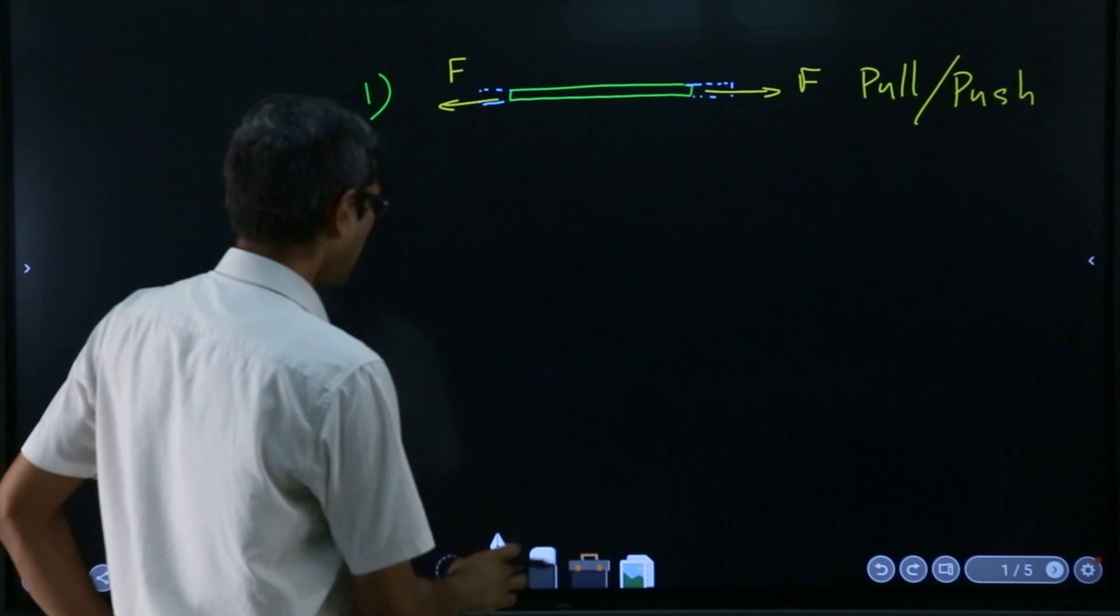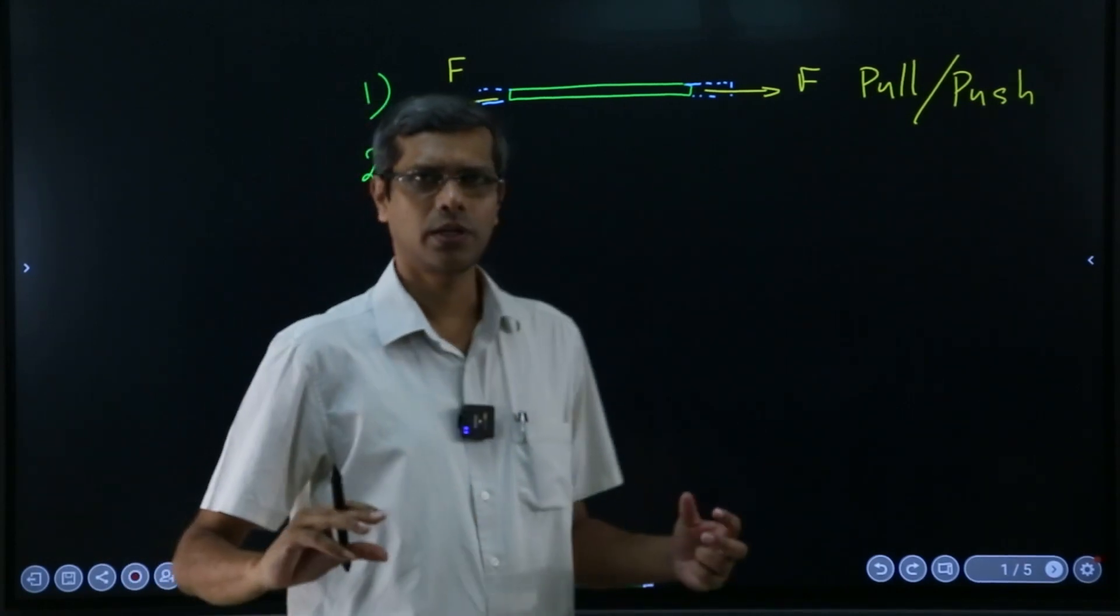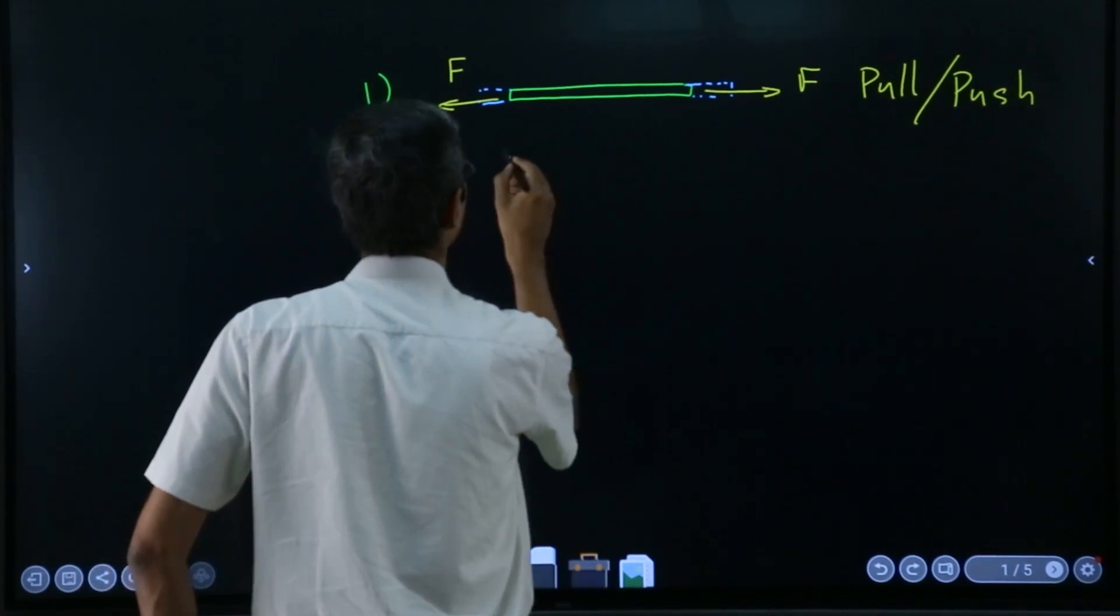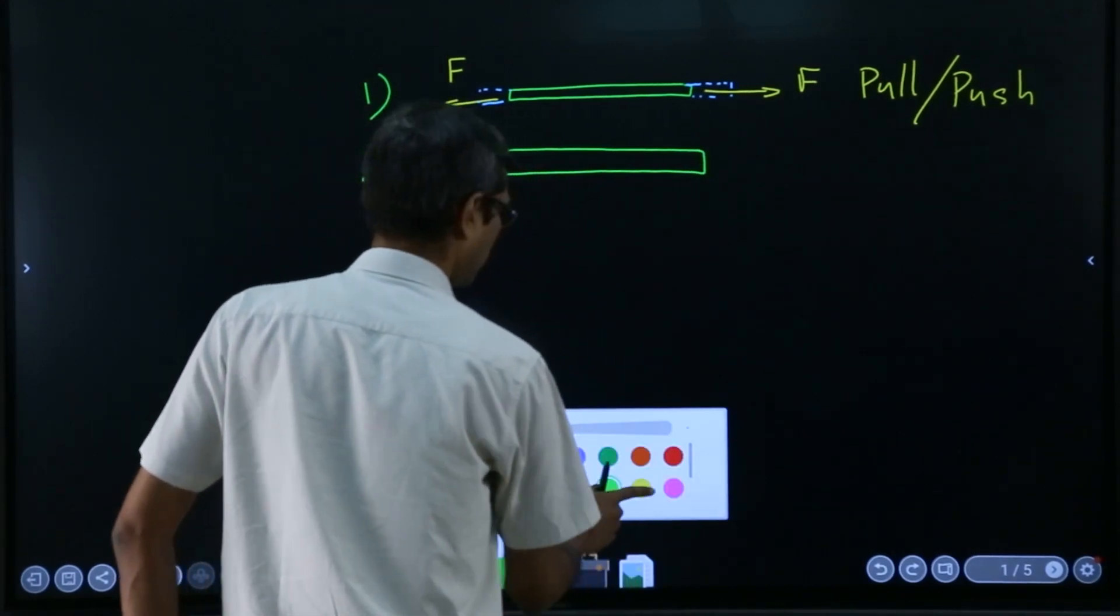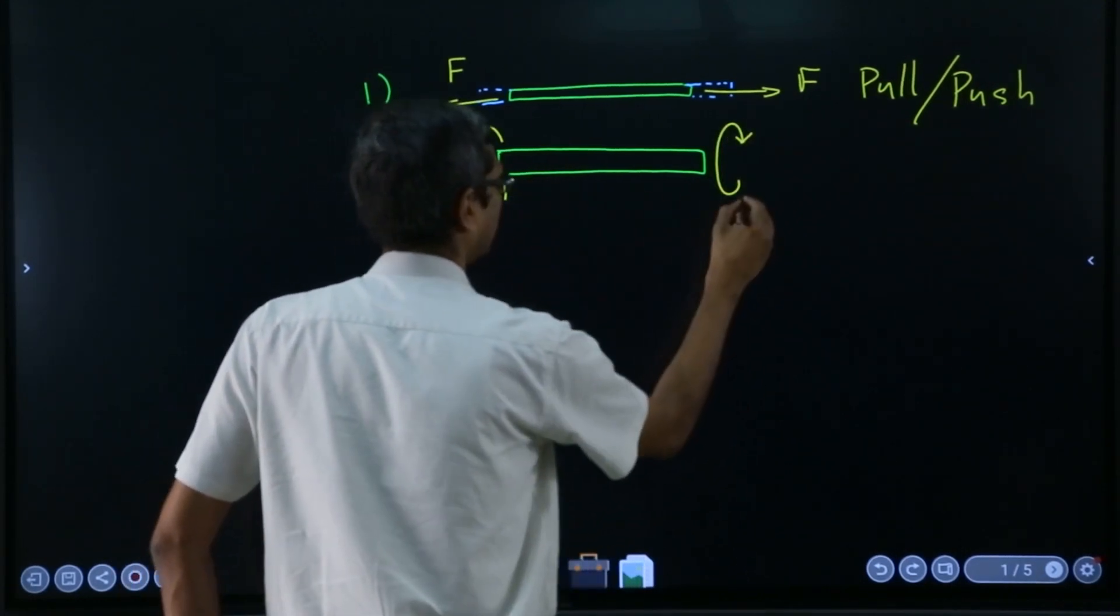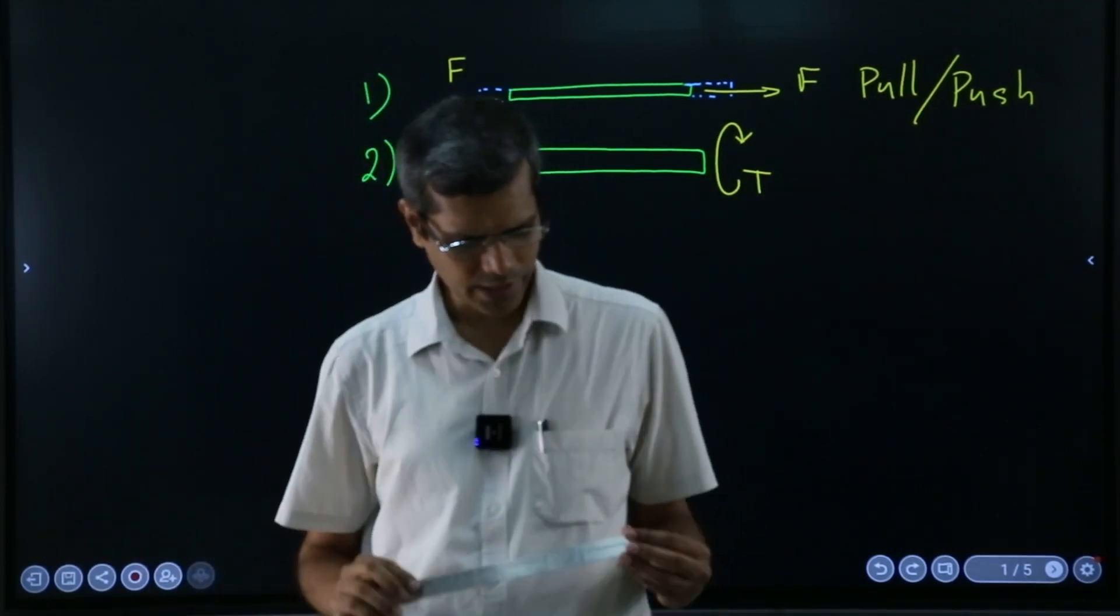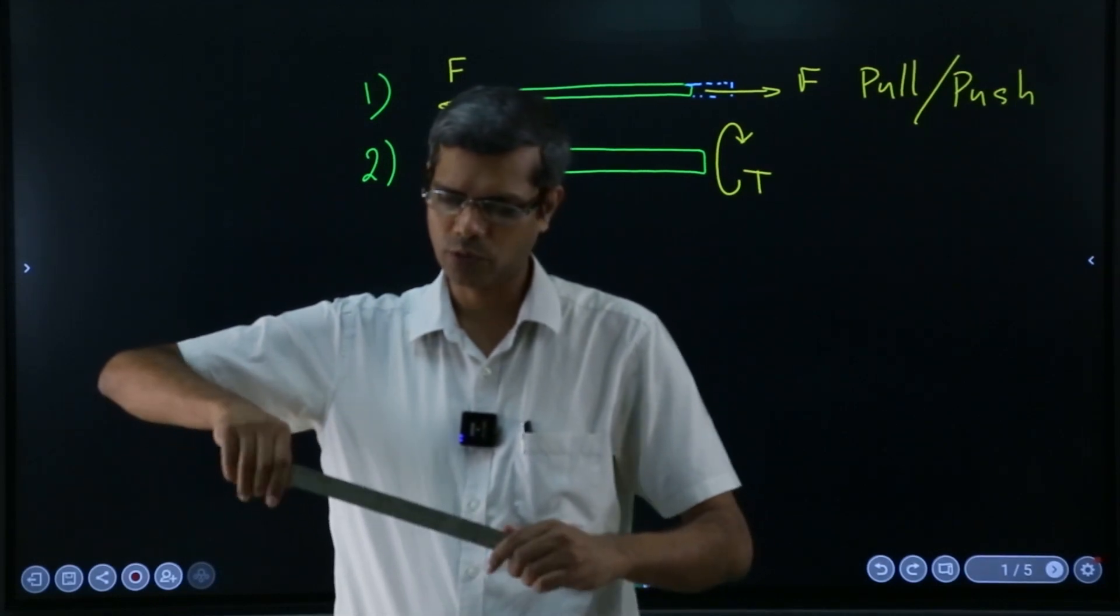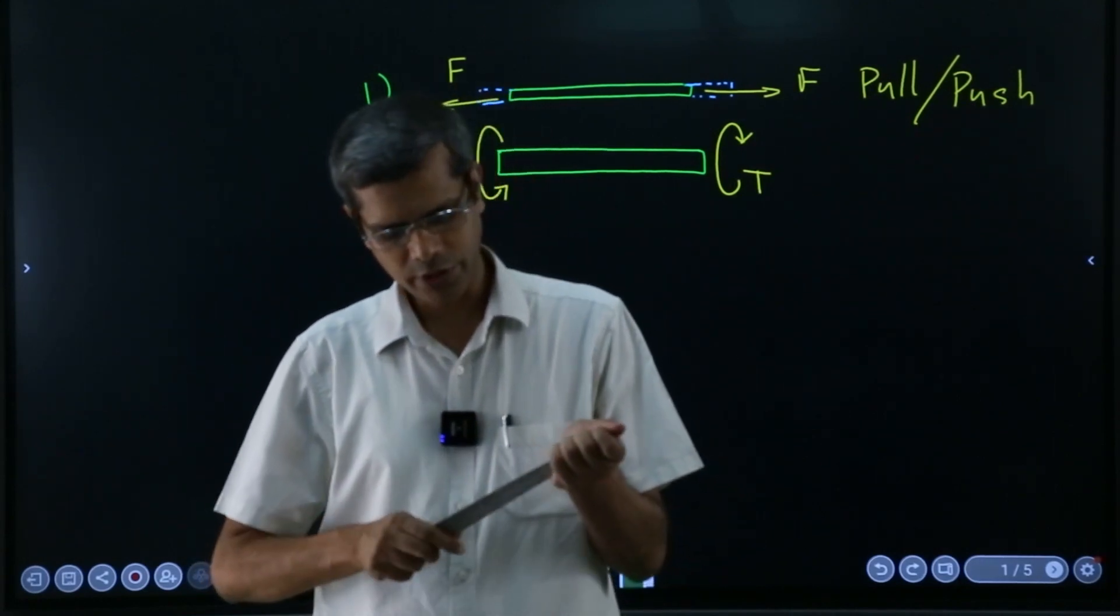The second type of deformation which we will deal with is that of twisting. Suppose we have again the basic block—I will draw exactly in the same way. But the force which we are applying now will be of the type of the torque, a twisting effort is being applied. For example, if I again take the example of this ruler, I will twist it. Are you able to see this? This is what I am trying to do—I am trying to twist it, not the pull one but the twist one.